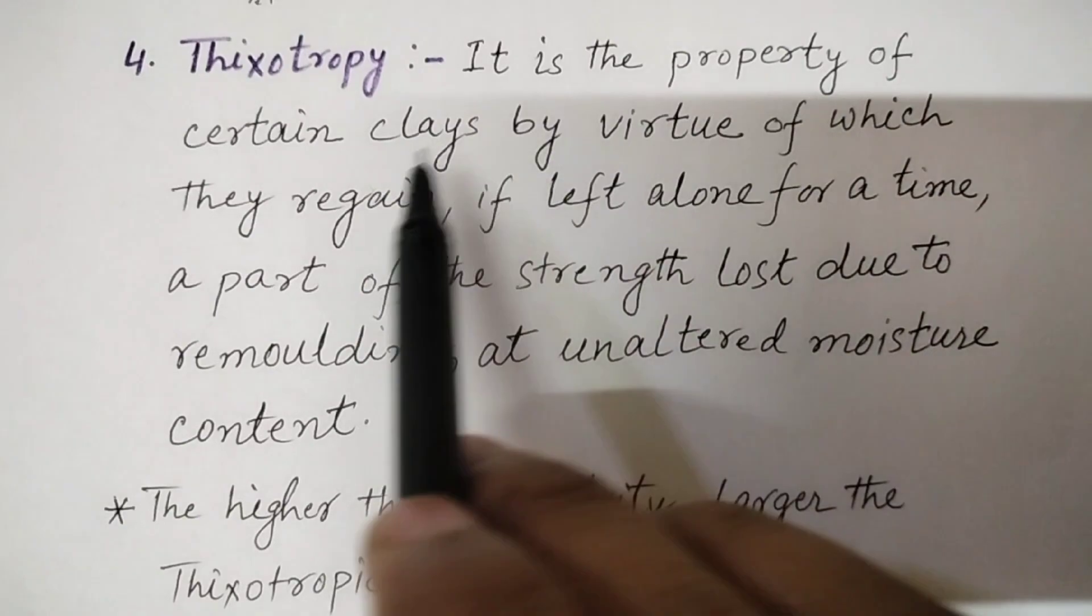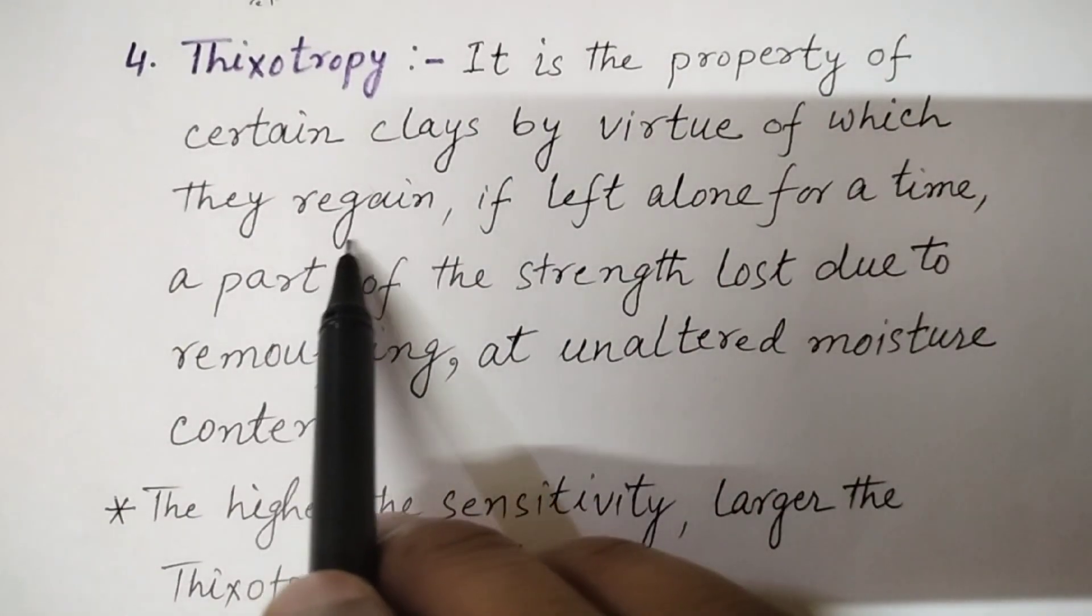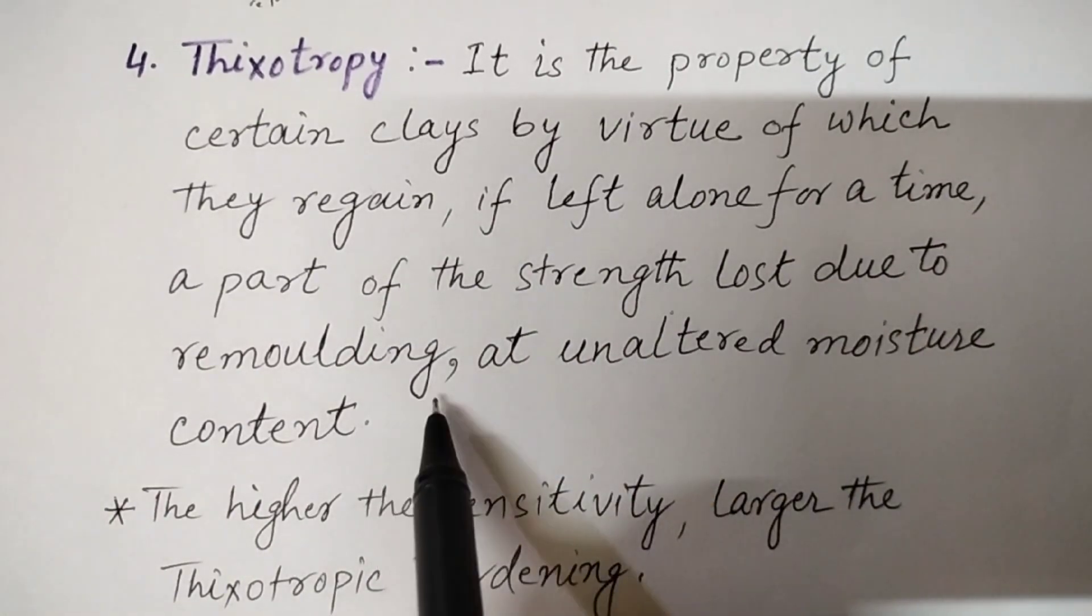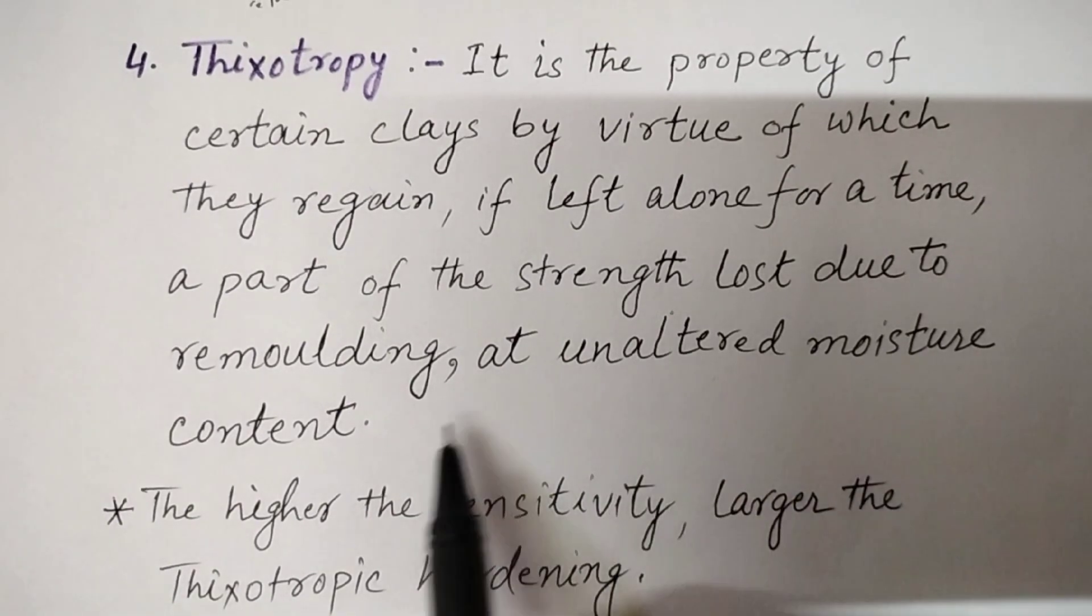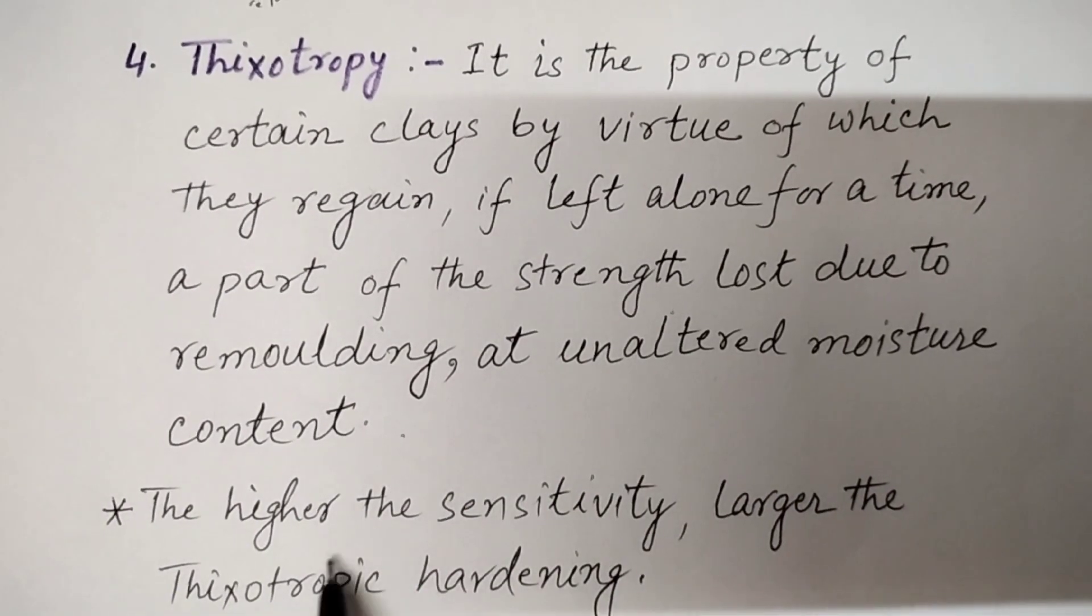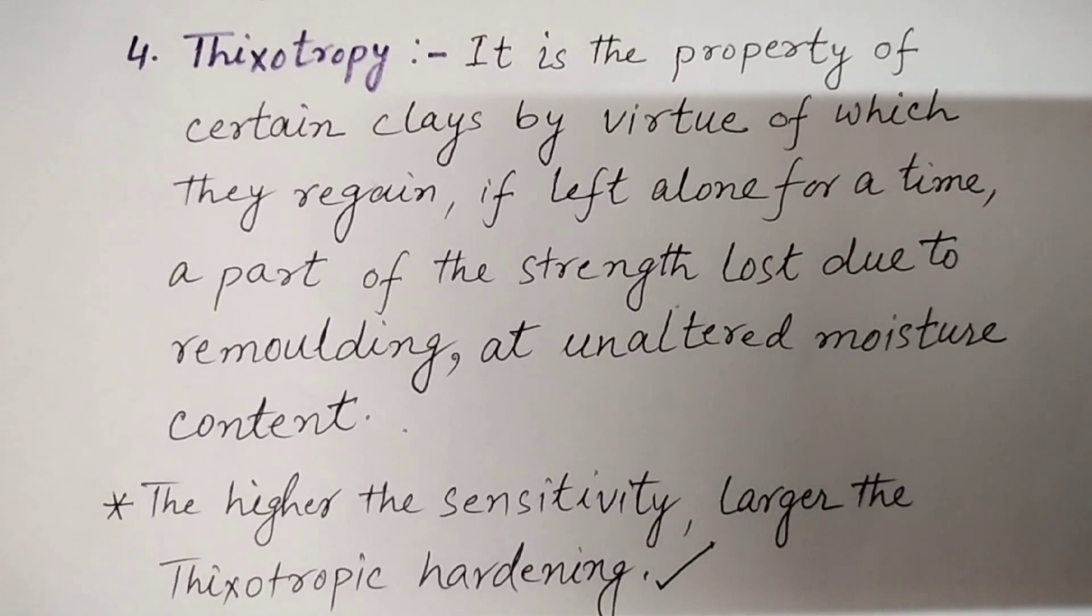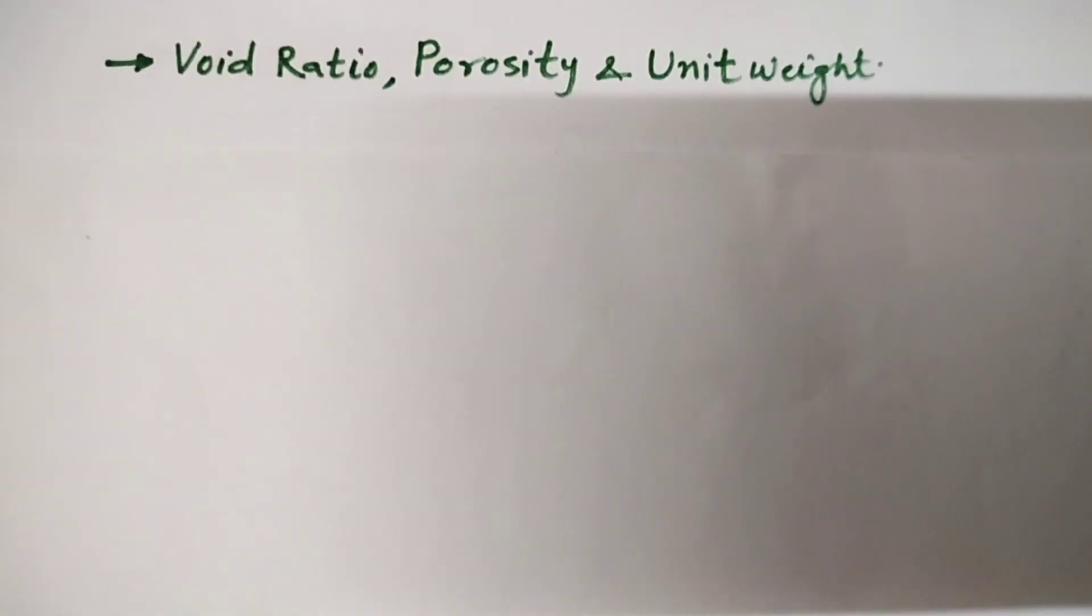Another term is thixotropy. It is the property of certain clays by virtue of which they regain, if left alone for a time, a part of the strength lost due to remolding at unaltered moisture content. The higher the sensitivity, larger the thixotropic hardening. Remember, the increase in strength with passage of time is attributed to the tendency of cohesive soil to regain their chemical equilibrium with the reorientation of water molecules in the adsorbed water layer.